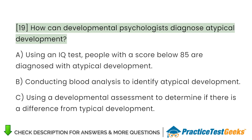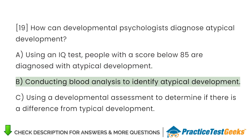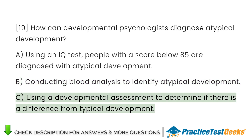How can developmental psychologists diagnose atypical development? A. Using an IQ test — people with a score below 85 are diagnosed with atypical development B. Conducting blood analysis to identify atypical development C. Using a developmental assessment to determine if there is a difference from typical development